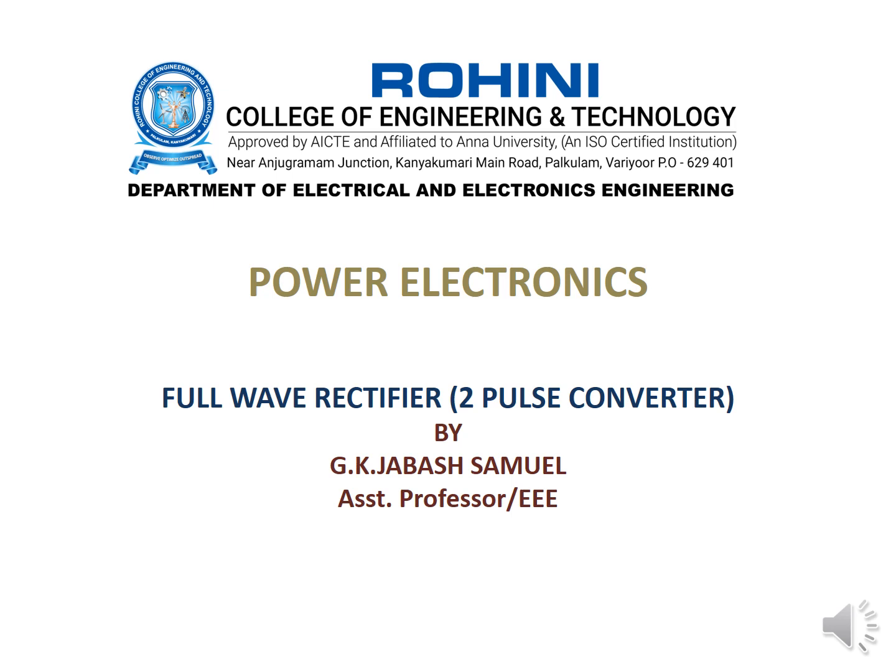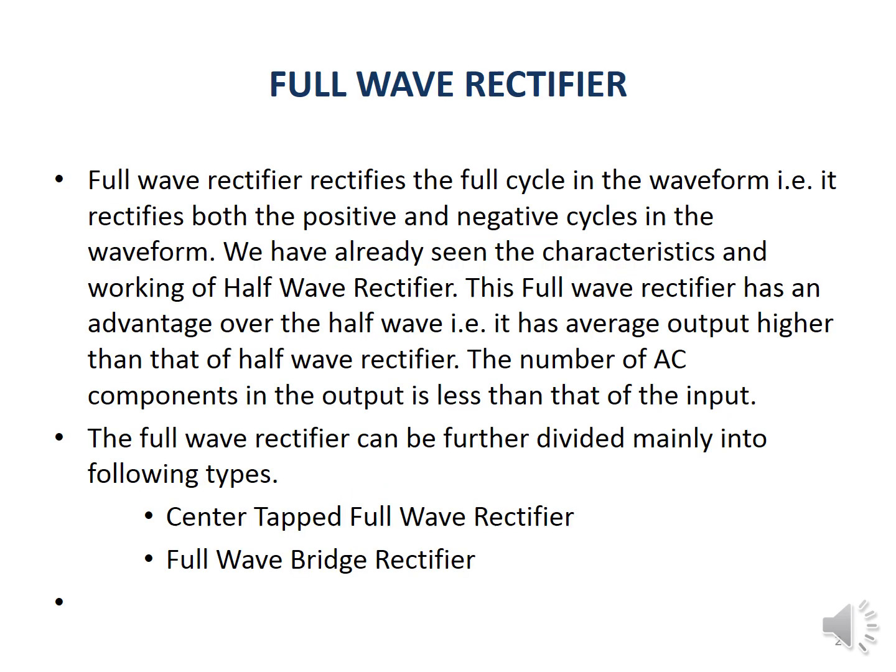Let us discuss the operation of the full wave rectifier. This full wave rectifier is otherwise known as two pulses. What is the difference between half wave and full wave rectifier? In the half wave rectifier, during the positive half cycle only, AC is converted to DC.